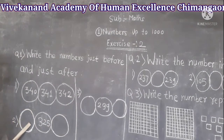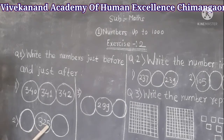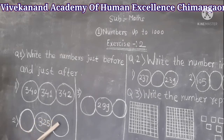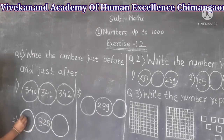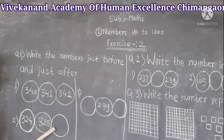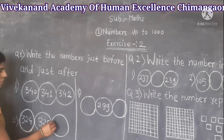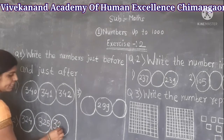Now the second example: we have been given 325. We have to write the before number and just after number. The before number of 325 is 324, and the just after number is 326.